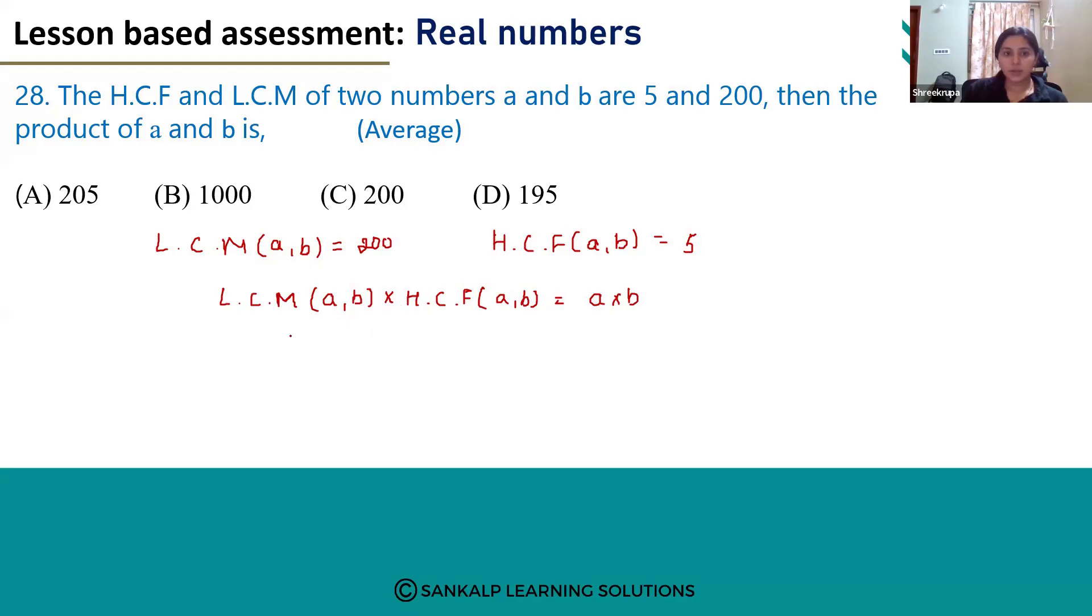So if we substitute the values here, LCM of A and B is 200, HCF of A and B is 5. If you take the product of these two numbers you will get 1000. So the product of the numbers A and B is 1000. The correct answer is option B, 1000.